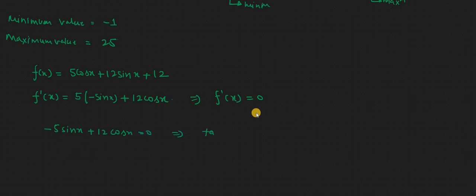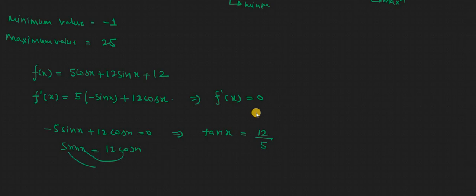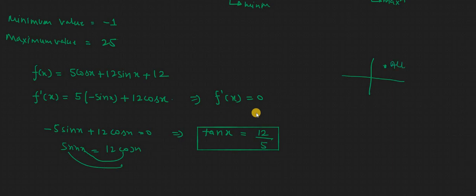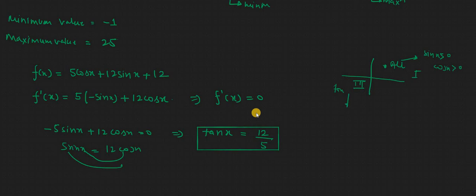Setting f'(x) = 0 gives −5sin(x) + 12cos(x) = 0, so 5sin(x) = 12cos(x), which means tan(x) = 12/5. We know tan is positive in the first and third quadrants. In the first quadrant, both sin and cos are positive; in the third quadrant, both sin and cos are negative. So critical points exist in both these quadrants.